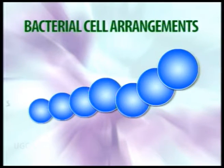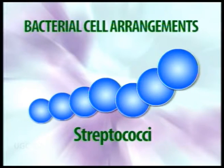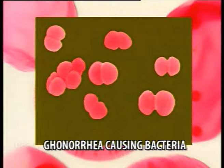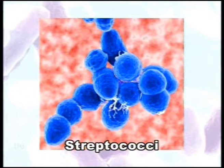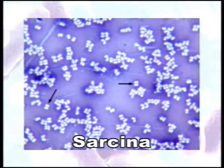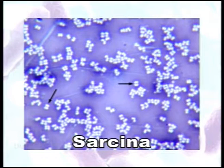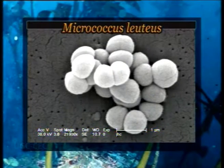Streptobacilli are chains of rods as described. Cocci can be diplococci when two spheres are paired, as seen in the bacteria that cause gonorrhea, or streptococci when present in chains, for example those involved in strep throat. The sarcina type is a distinctive arrangement with a cube-like packet of eight cocci, as seen in Micrococcus luteus.